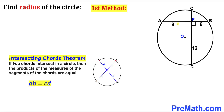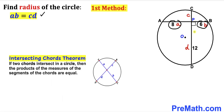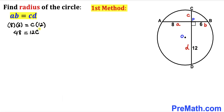Let me label the segments as A, B, C, and D and fill in the intersecting chords formula. In our case A is 8, B is 6, C is unknown, and D is 12. So this becomes 8 times 6 equals C times 12. Dividing both sides by 12, our C value turns out to be 4 units.